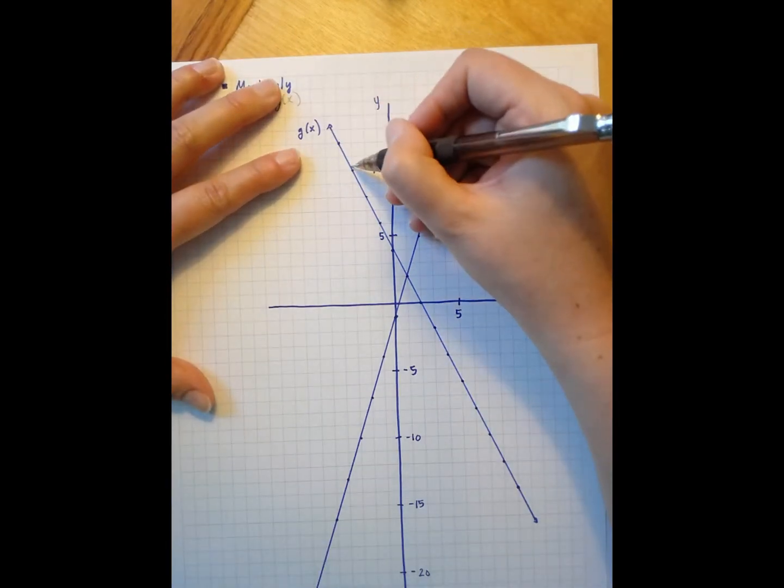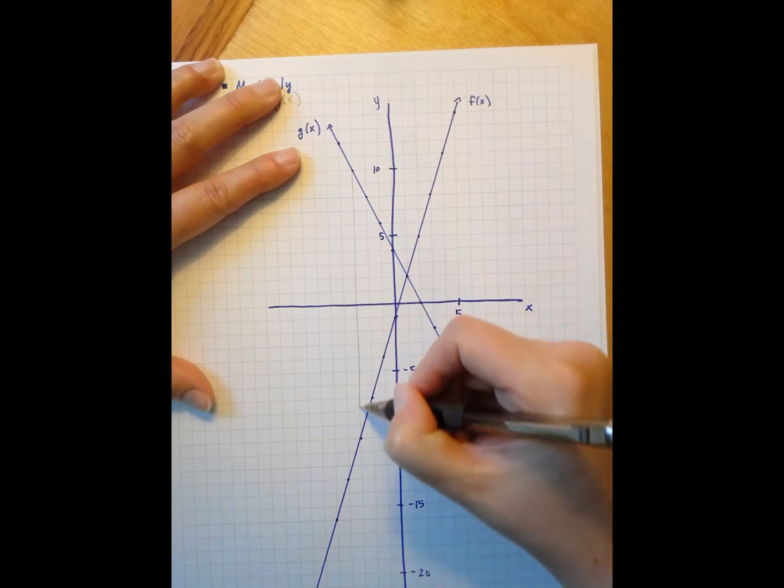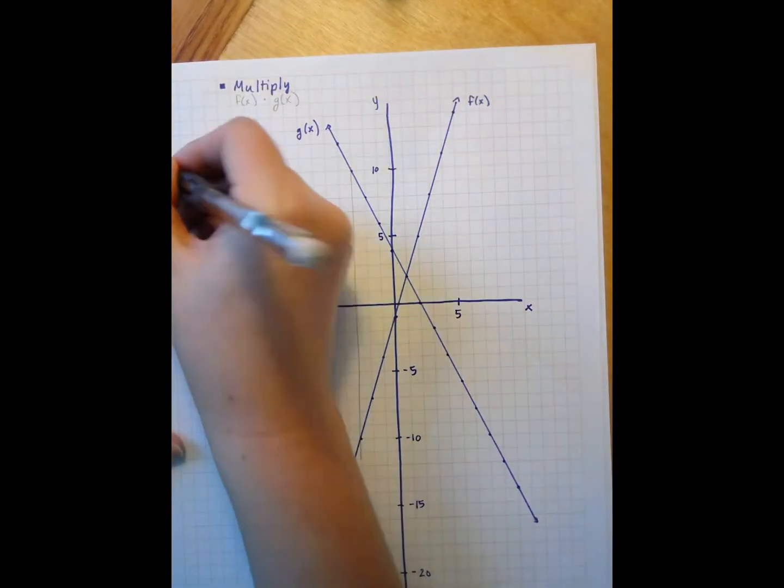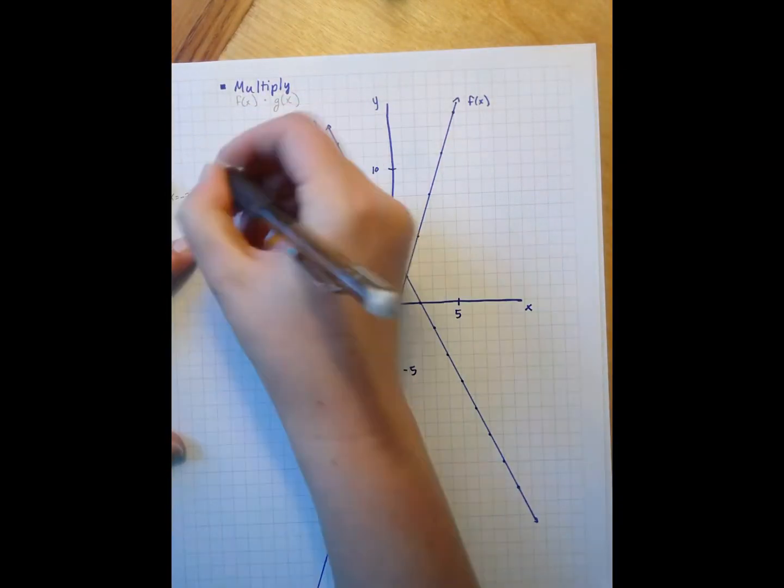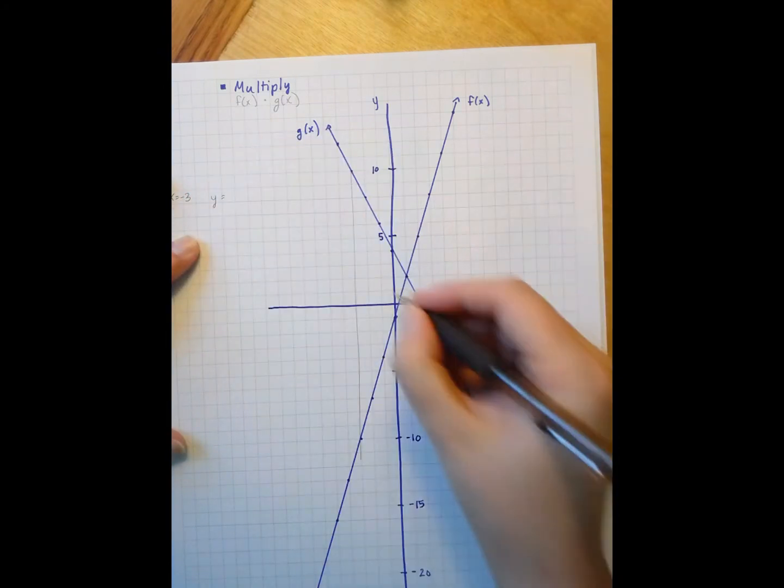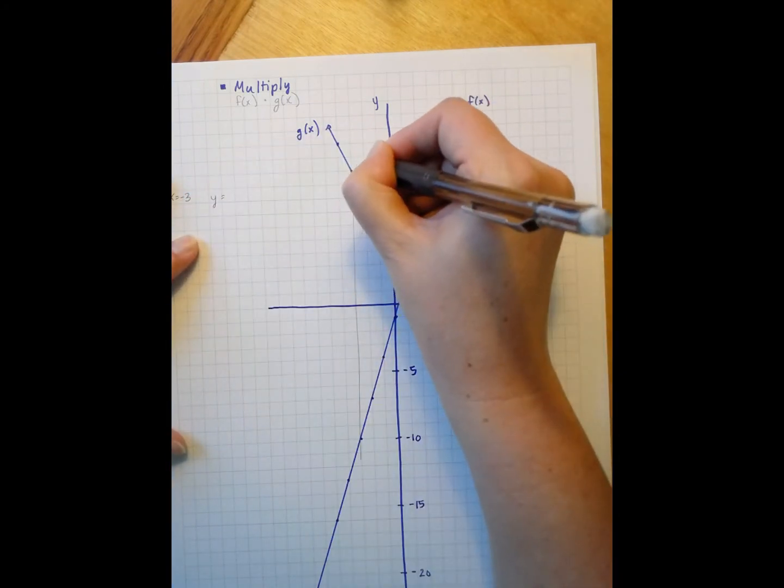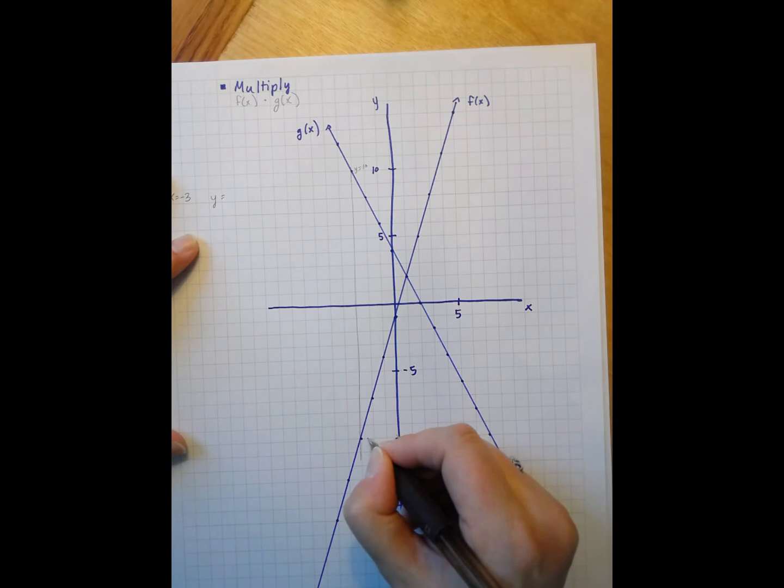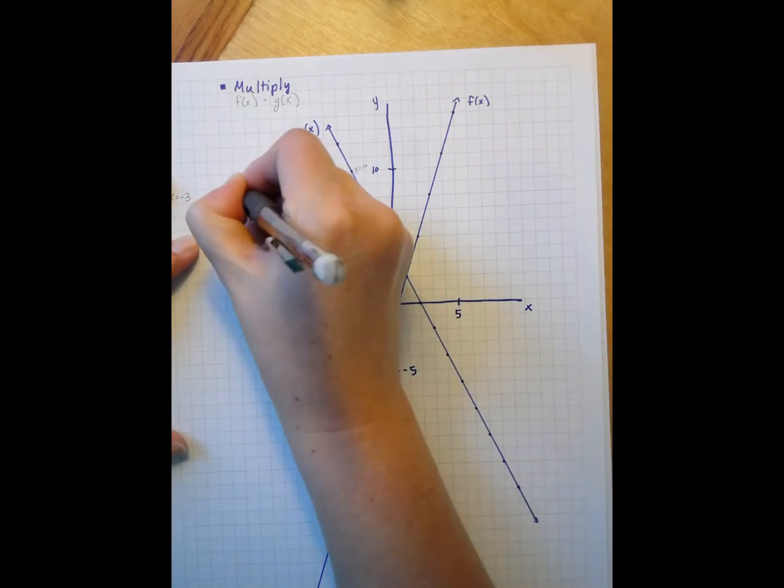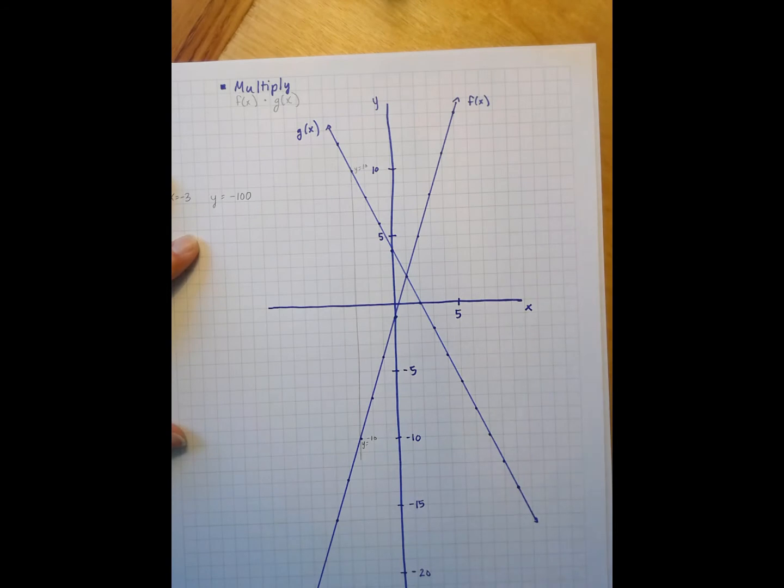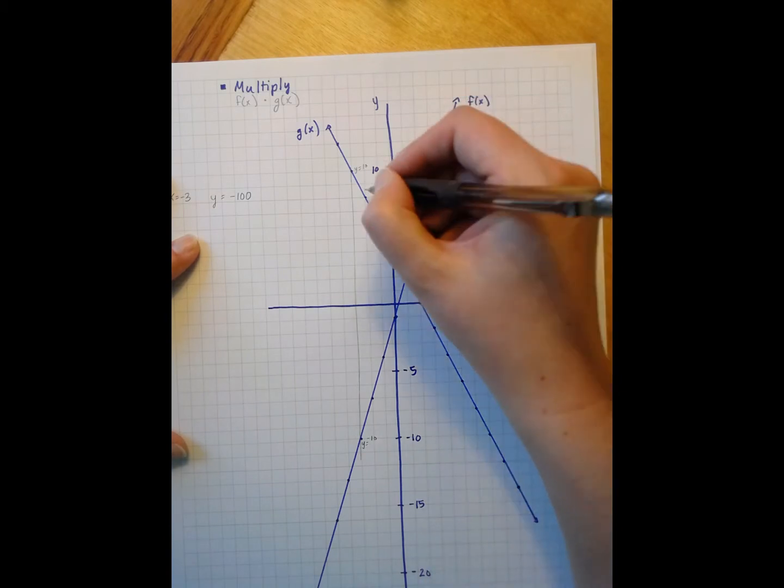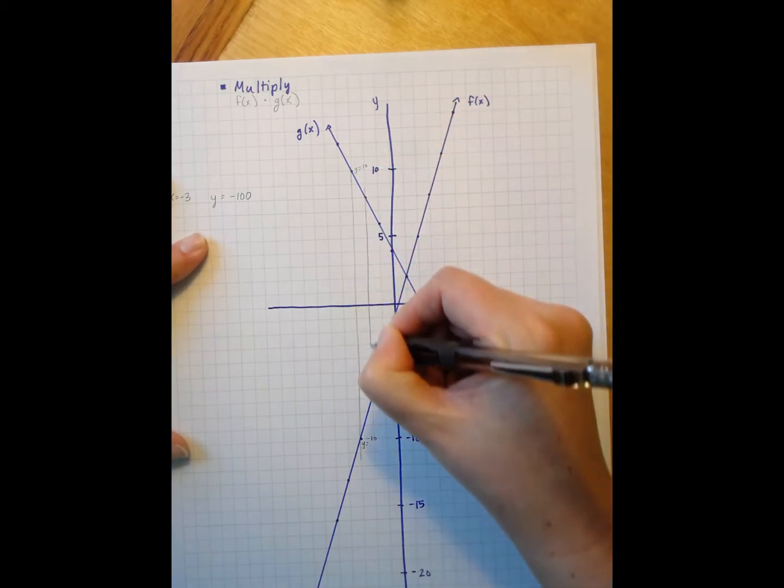So let's start out here, where x is negative 3. My new y is going to be 10 times negative 10, which is negative 100. I'm not going to be able to graph that, unfortunately. But at least it gives me a sense that my graph, that value is way down here somewhere.